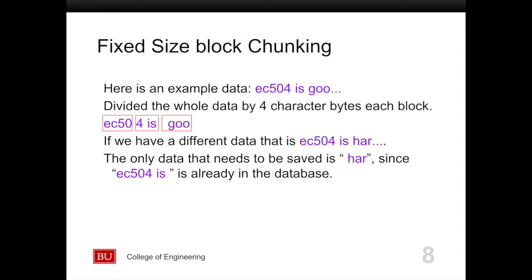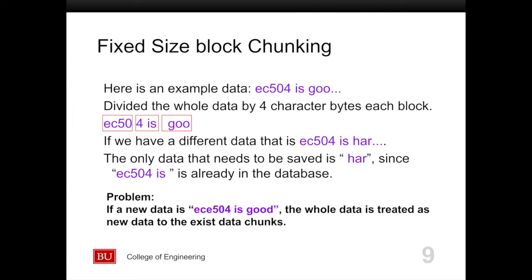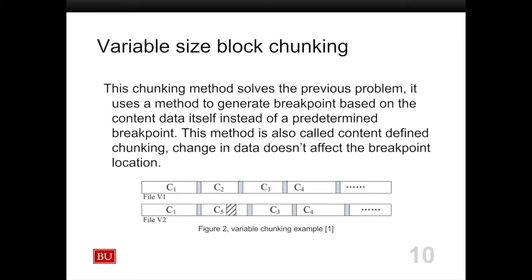We will first introduce some basic concepts of those algorithms. For fixed-sized block chunking, here is an example: 'EC504 is good' — divide the whole data by four-character bytes and we get a structure. If we have different data, 'EC504 is hard,' the only new data that needs to be saved is 'hard,' since the previous structure is redundant. However, there is a problem: if new data is ' EC504 is good,' the whole data is treated as new, and we cannot save much storage space.